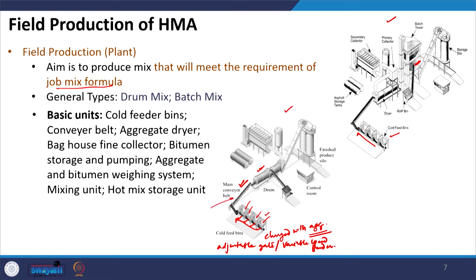In the drum mix plant the cold feed elevator has an automatic weighing system, so the appropriate quantity of aggregate is weighed before being moved to the drum for drying. This measurement of aggregate weight can be controlled remotely. Before entering the drying drum the aggregate will also have moisture, so adjustment for moisture is also made as the aggregates move from the cold feeder bins to the elevator.